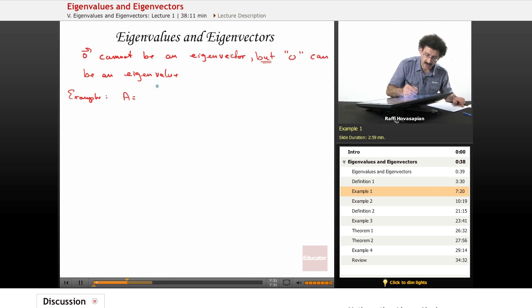Say that A is the matrix [0, 1/2; 1/2, 0]. Well, if we take A times the vector, let's just say [1, 1], well that's equal to [0, 1/2; 1/2, 0] times [1, 1].